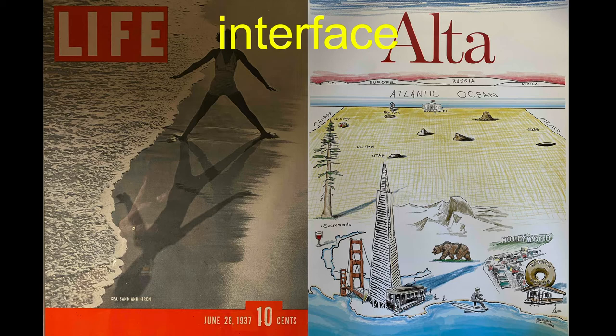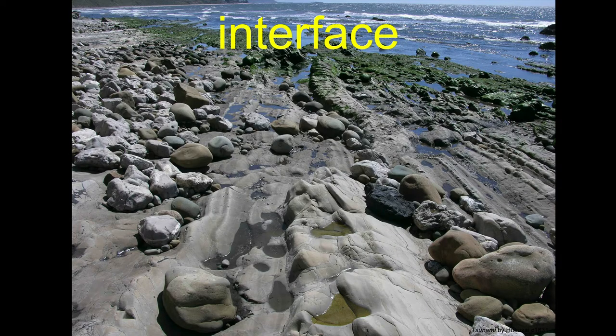There's the bleak, empty terrestrial landscape — it's not all bleak, not all empty — but things happen at this transition space. Perhaps the most dramatic example of a transition space in the coast, the interface, is the intertidal.